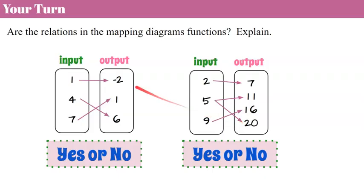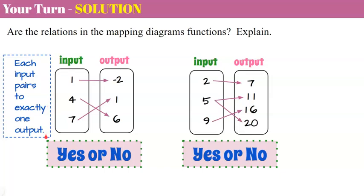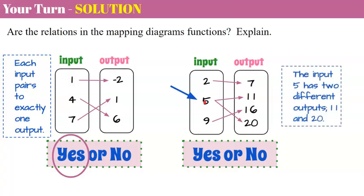Your turn. Determine if these relations are functions — pause the video and come back when you're ready. Welcome back. Looking at the first: each input maps to exactly one output. So yes, this is a function. Now the second: 2 maps to one output, but 5 maps to both 11 and 20. So this is not a function because input 5 maps to two outputs, 11 and 20. Therefore, no, this relation is not a function.